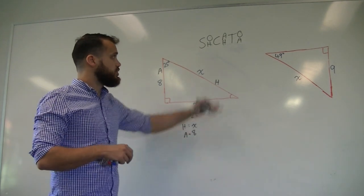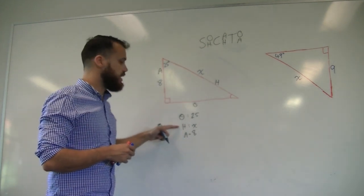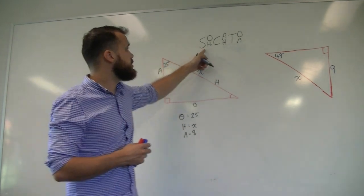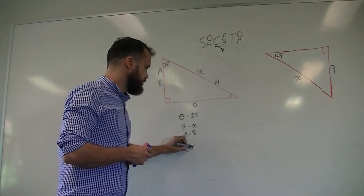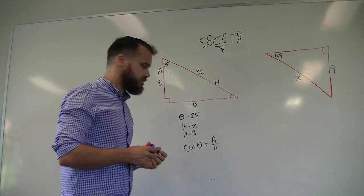Okay, look at SOHCAHTOA. Decide which of these ratios has A and H in it, adjacent and hypotenuse. It's not this one, it's not this one. Okay, so cos theta equals adjacent over hypotenuse.